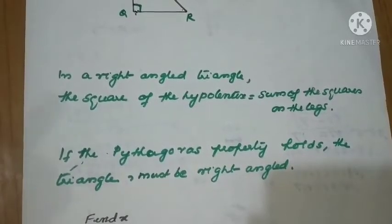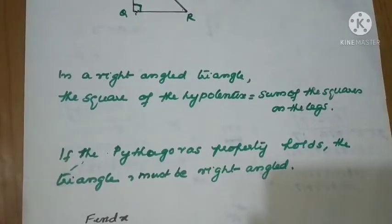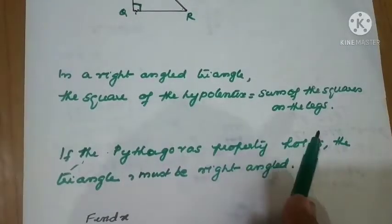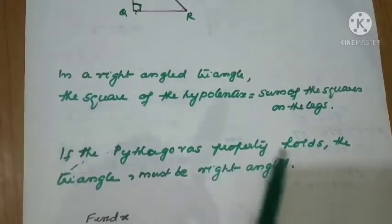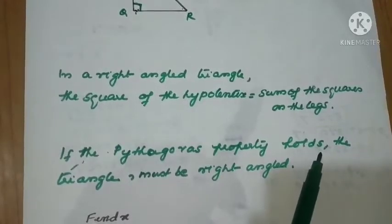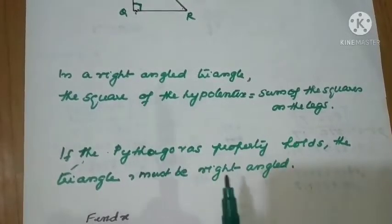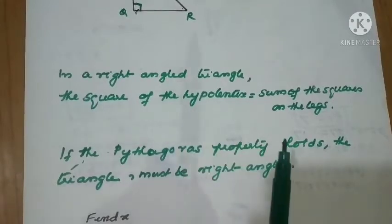A Greek philosopher, Pythagoras, found out that there is a property in a right-angled triangle. The property is: the square of the hypotenuse is equal to the sum of the squares of the legs. If the Pythagoras property holds good, then the triangle must be right-angled only; otherwise we cannot apply this.